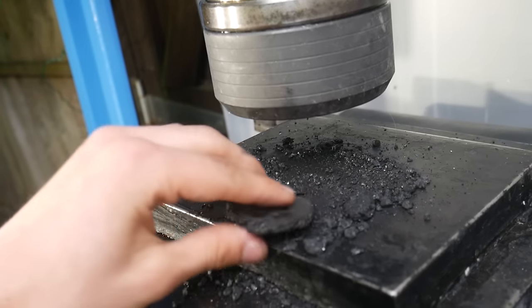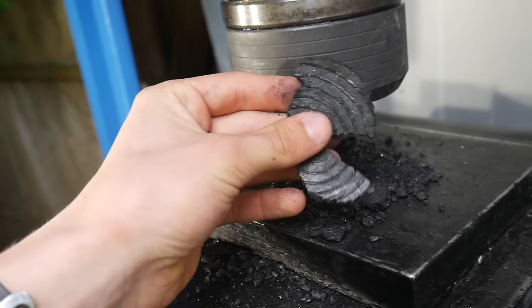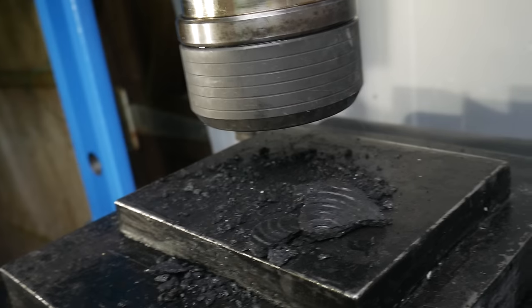So yeah, that is what happens when you crush coal with a hydraulic press. It does not turn into diamonds, unfortunately.